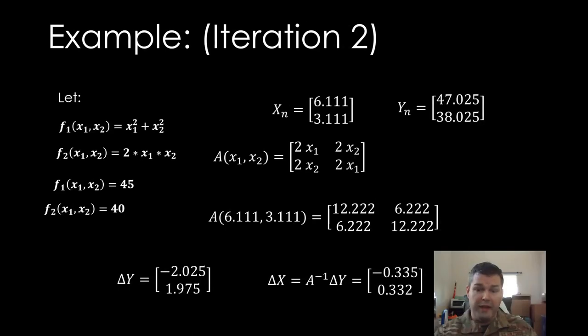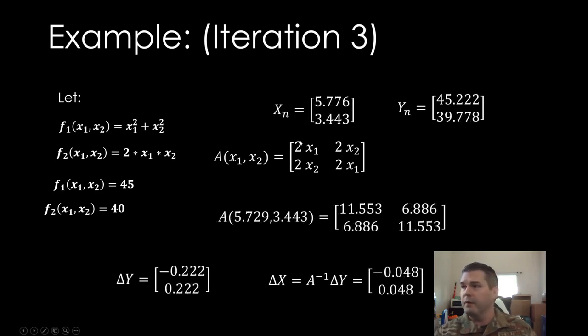So with that information, I do it again. 5.7 and 3.4 right up there at the top. Evaluate my Y's. I get y1 equals 45.2, y2 equals 39.8. You see we're about 0.2 off. We're getting pretty close. We're only at iteration three. Granted, I started with a really good guess.